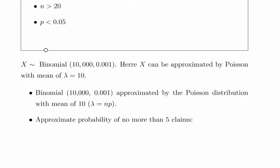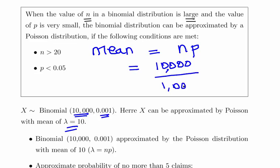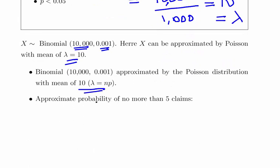X is a binomial random variable with sample size 10,000 and p equals 0.001. X can be approximated by the Poisson distribution with mean lambda equals 10. Where does that figure come from? The binomial mean equals n times p, which in this case is 10,000 multiplied by 1/1000, which gives us 10.